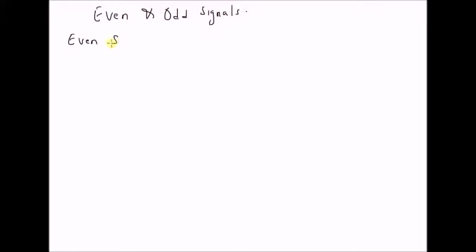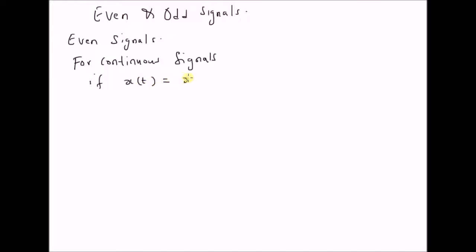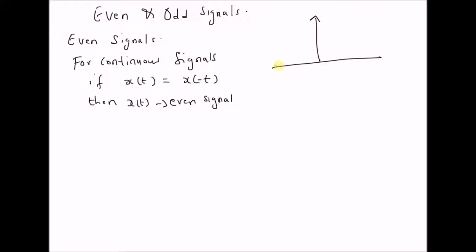First, let us look at even signals. A signal x of t is defined as an even signal if it is equal to its reflection. That is, for continuous signals, if x of t is equal to x of minus t, then x of t is an even signal. The signal x of t has a structure such that the values on the right-hand side of the y-axis match the values on the left-hand side.